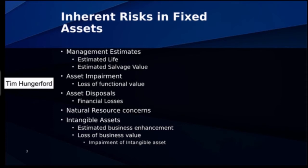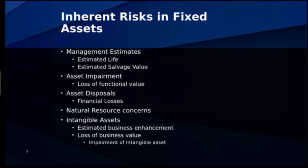Some of the inherent risks with fixed assets include estimates such as estimated useful life and estimated salvage value — if those are altered in some way, that's an inherent risk. Asset impairment is another risk, where the asset loses the functional value you bought it for. There are also losses through disposal, natural resource or environmental problems affecting a fixed asset, and intangible assets like patents or goodwill that carry estimated values. If an acquisition doesn't deliver the expected value, you may have to record an impairment on the goodwill established.